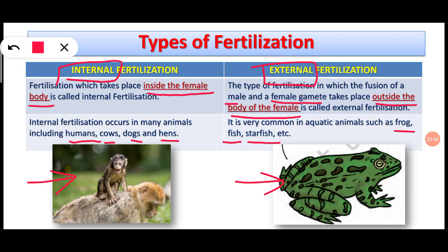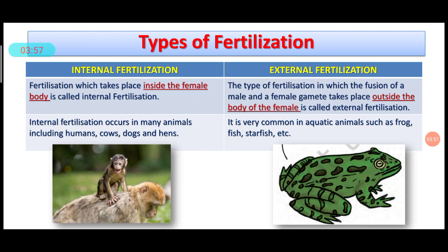In monkeys, internal fertilization takes place. But in frogs, external fertilization takes place.